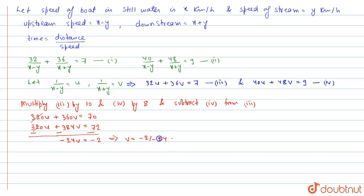Now from equation number 3 we get 32u plus 36 into instead of v we can write 1 by 12 is equal to 7, which implies 32u is equal to 7 minus 3 that is 4.